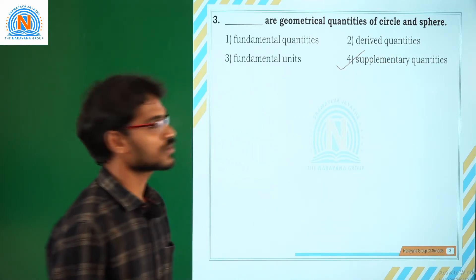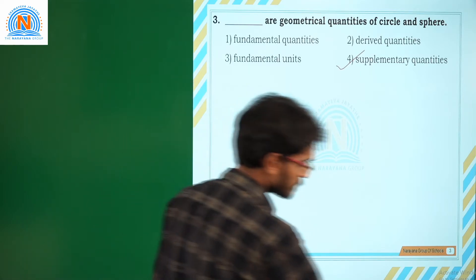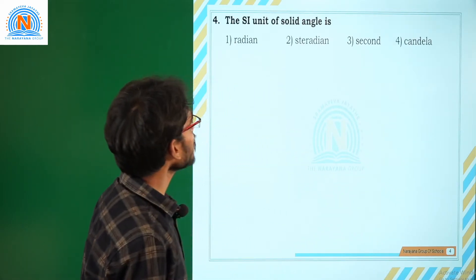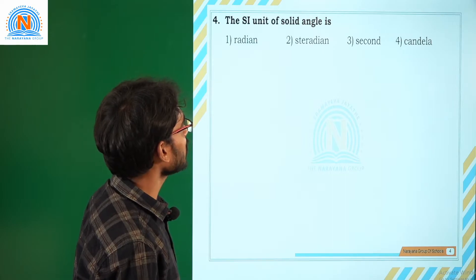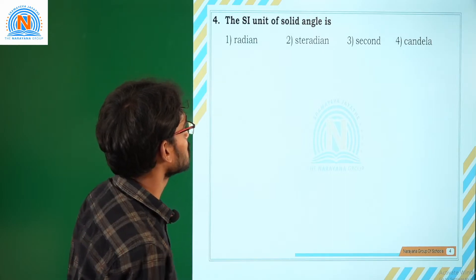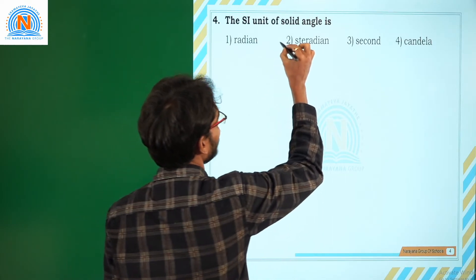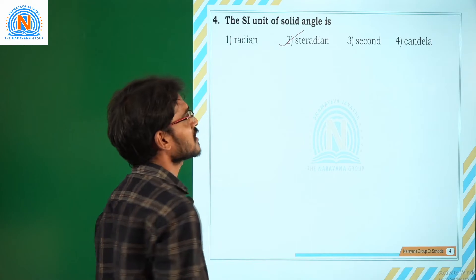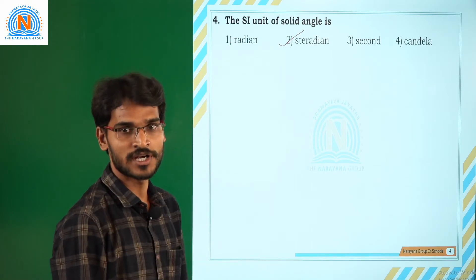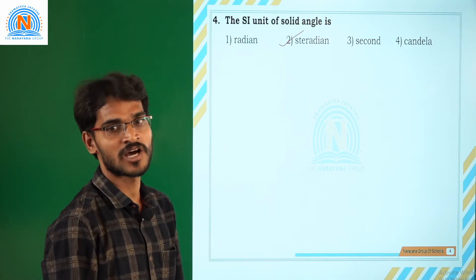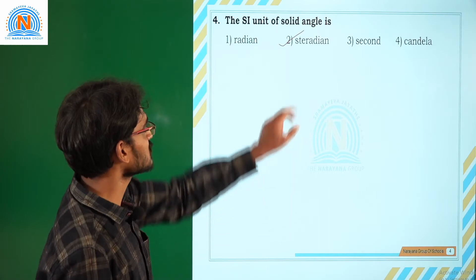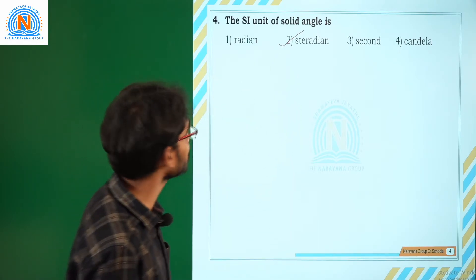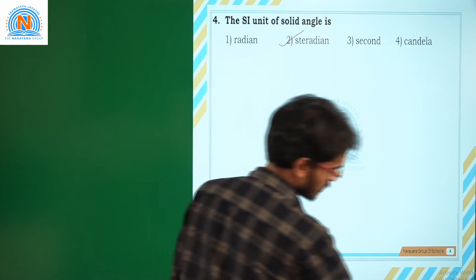Next, move to another question. The SI unit of solid angle is the steradian. That means solid angles are measured in terms of steradians. That is why we choose the second option as correct for the fourth question.